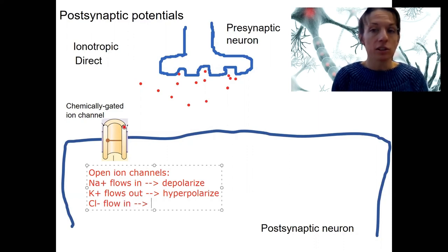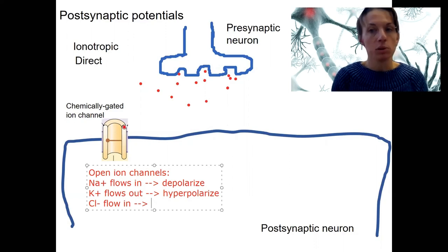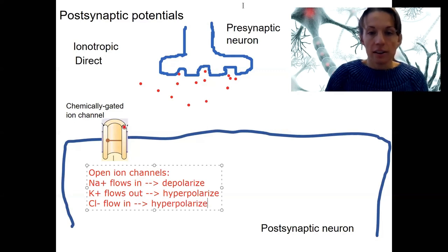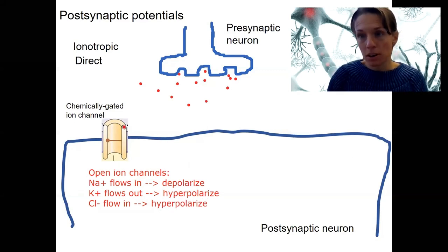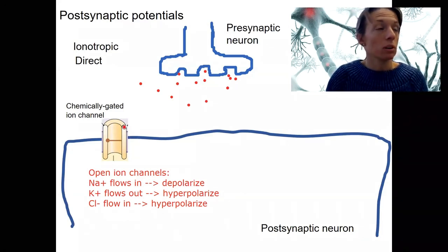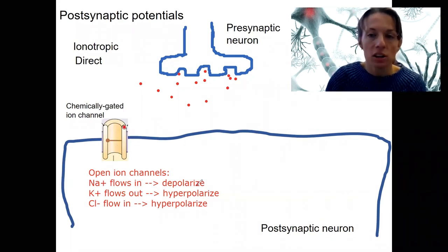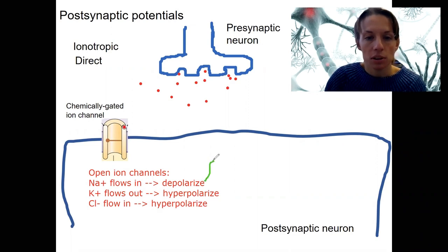Even though it's negative inside, chloride still flows in — down its electrochemical gradient when you start at rest at minus 70. This is going to hyperpolarize. Now I'm going to introduce one more set of terms. We're going to have some excitatory signals — depolarization — that's going to be excitatory. It's going to bring the cell closer to threshold. This is called the excitatory post-synaptic potential, EPSP.